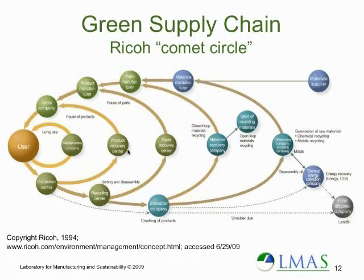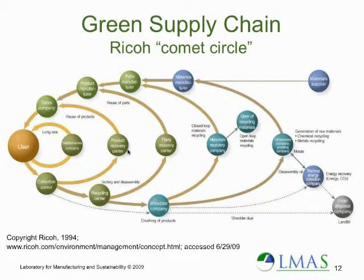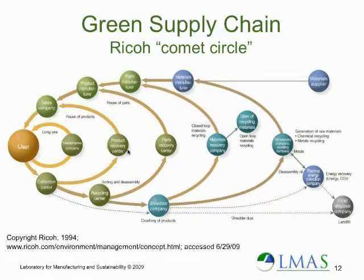An interesting holistic view was put forward by Ricoh — a company that makes copying machines — back in 1994, and they call it the Comet Circle. At the top end of the Comet Circle, moving from material supplier towards the left, you see the upstream supply chain: where your materials come from, how they're converted into raw materials for manufacture of pieces, sub-assemblies, how they fit into the product you manufacture, how they go through your sales scheme, and finally to the user. The bottom portion, moving clockwise, comes out of the user — the lowest level being the least efficient type of resource recovery: collection, recycling, shredder, burning, or landfilling.